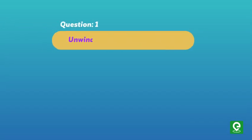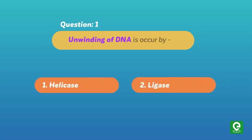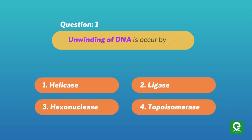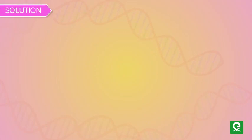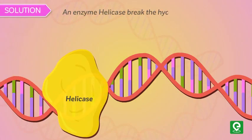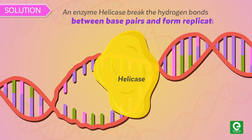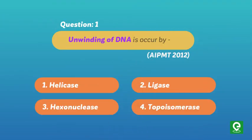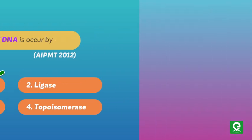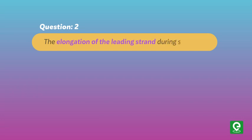Question 1 (AIPMT 2012): Unwinding of DNA is carried out by — (1) helicase, (2) ligase, (3) exonuclease, (4) topoisomerase. Solution: An enzyme helicase breaks the hydrogen bonds between base pairs and forms the replication fork. Hence, option 1 is correct.